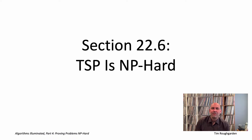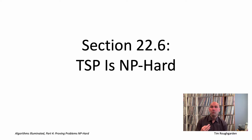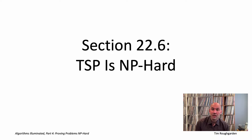Hi everyone, and welcome to this video that accompanies section 22.6 of the book Algorithms Illuminated Part 4. This section is the third of our four main reductions, and here we will prove finally that the famous traveling salesman problem is indeed NP-hard.